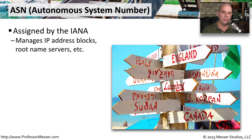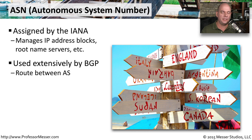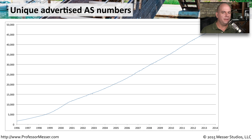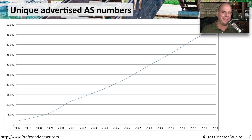The IANA is the same organization that manages IPv4 address blocks and the root name servers, along with other administrative parts of the internet. You'll see ASNs used when taking advantage of BGP, or Border Gateway Protocol, which routes from one AS number to another. The number of autonomous systems has grown rapidly from the early days of the internet to today — you can see it is a straight line up. Because of that, BGP has become a very complex set of protocols that needs strict administration to work properly.